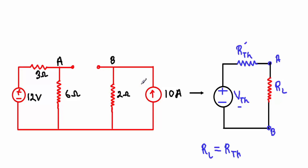The Thevenin equivalent circuit converts the whole network into a voltage source VTH in series with a resistance RTH, connected across terminals A and B. RTH is the resistance measured across the output terminals.